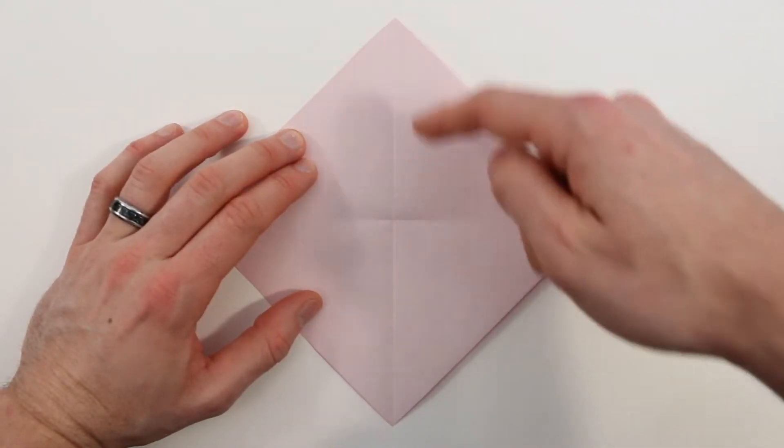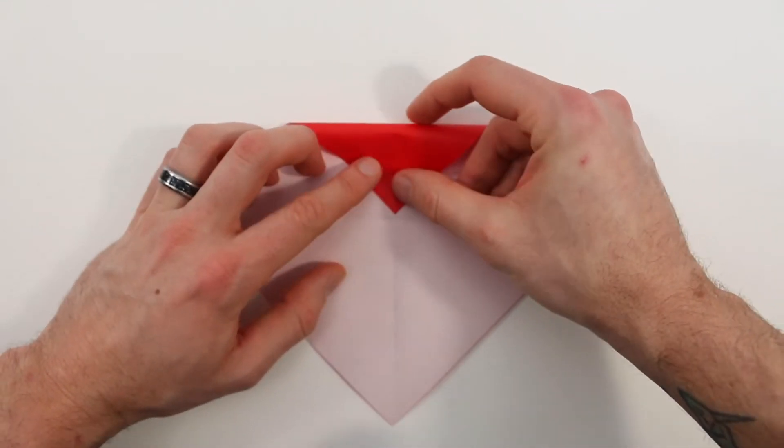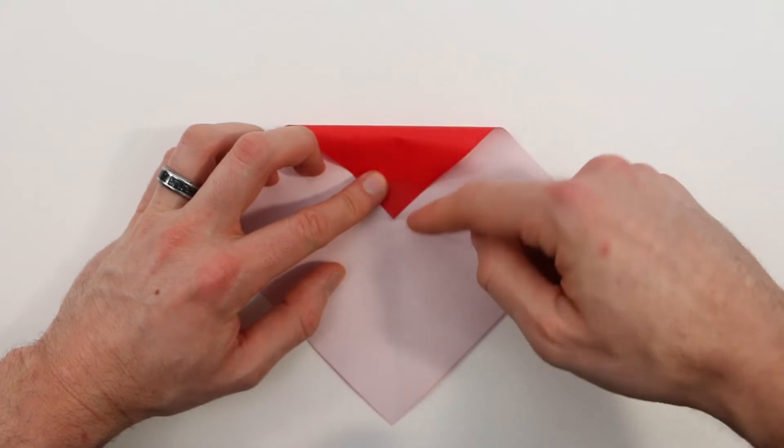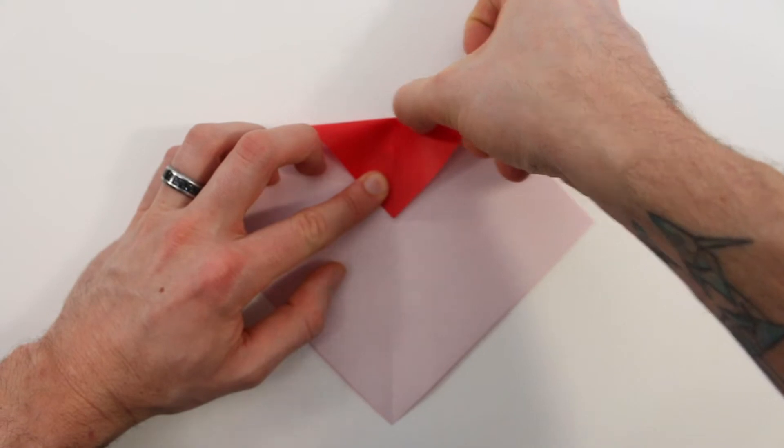Next we're going to bring this top corner into the X we just made in the center. Fold that down, line it up right in the center, and then crease it down.